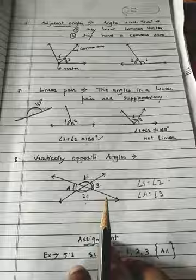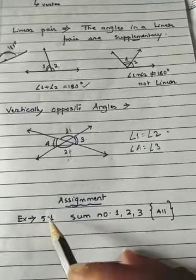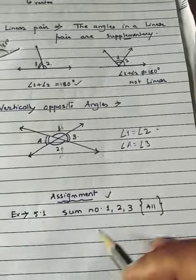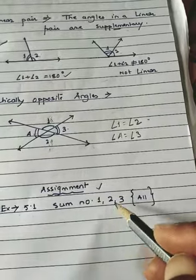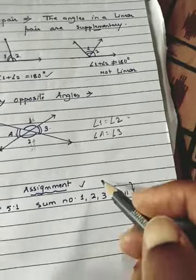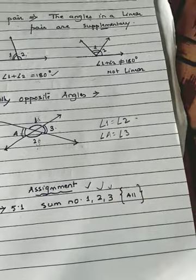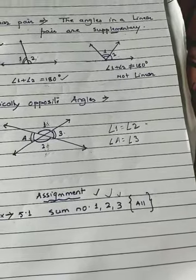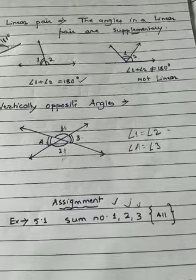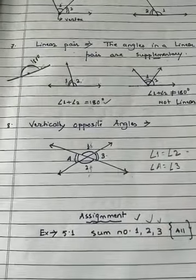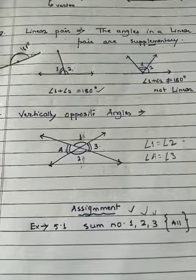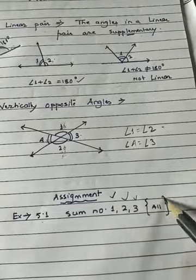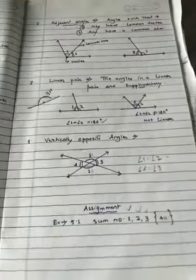That was all the notes for this chapter. Your assignment for today is Exercise 5.1, questions one, two, and three — all parts. In question one, you have to pair up which are the complementary angles. In question two, pair up the supplementary angles. In question three, two degree values are given — just add them and state whether the angle is complementary or supplementary. Very easy! If you have any problem, share it in the WhatsApp group. Thank you and God bless you all.